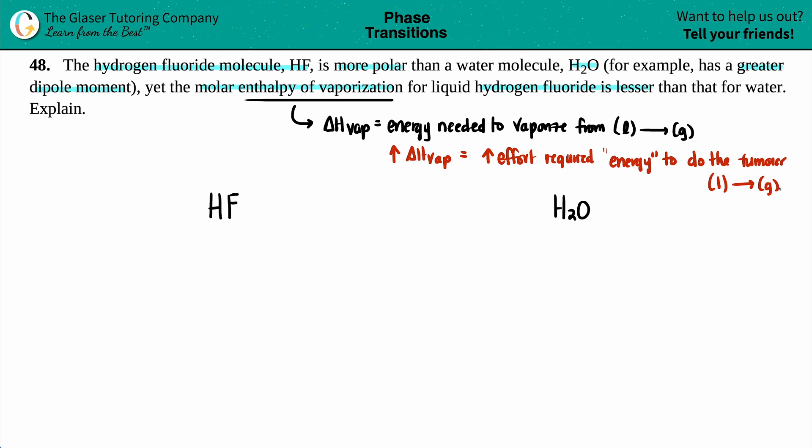In terms of energy to do the turnover, meaning to go from a liquid to a gas. Now, this could be coming from many different things, whether you have more intermolecular forces or you have a higher molar weight. Chances are those two things are the reasons behind why some molecules have a really, really high enthalpy of vaporization.